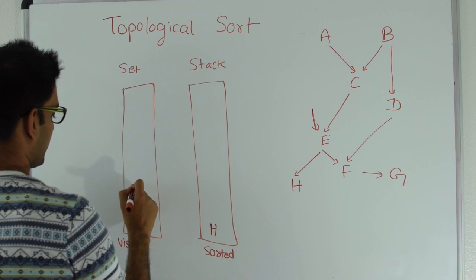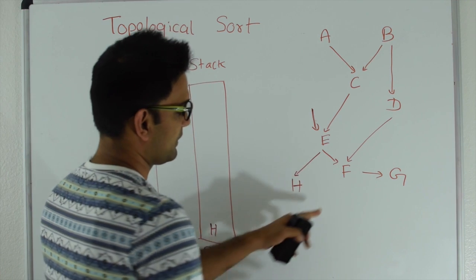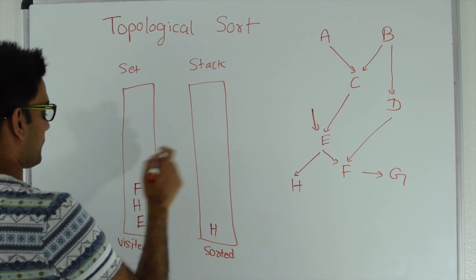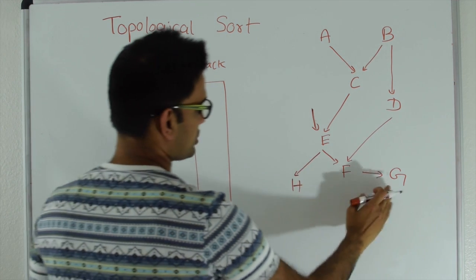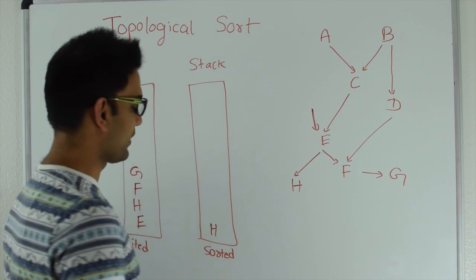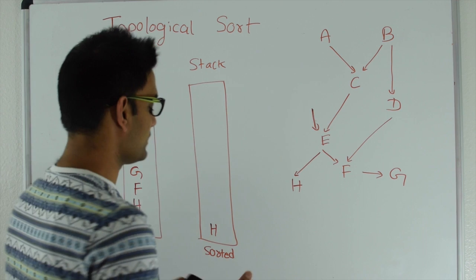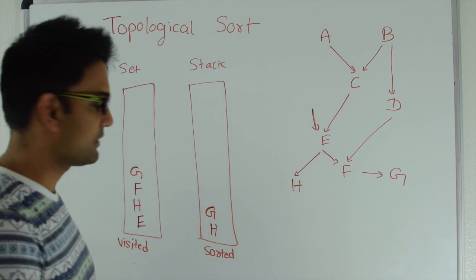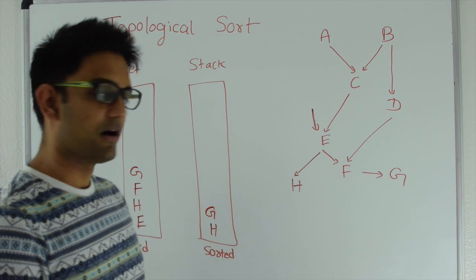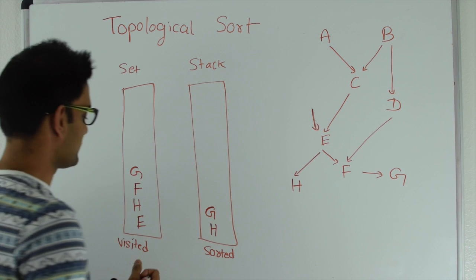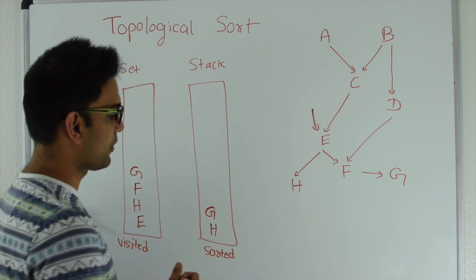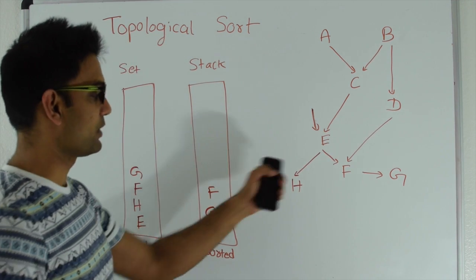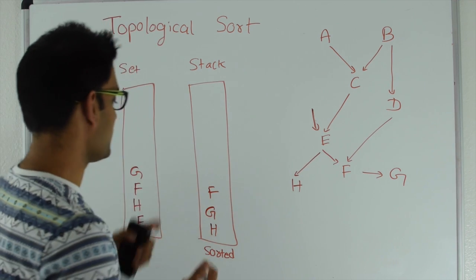We go back to e, which has another child f. F is not in the visited set, so we put it in and explore f's children. F has a child g, and g is not in the visited set, so we put g in the visited set. G doesn't have any children, so we are done exploring g and put g into the sorted stack. We go back to f — f has no more children, so we put f into the stack. Back at e, all children are explored, so we put e into the stack.